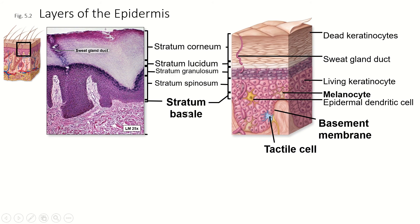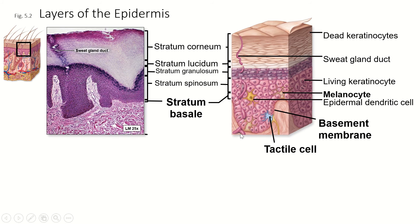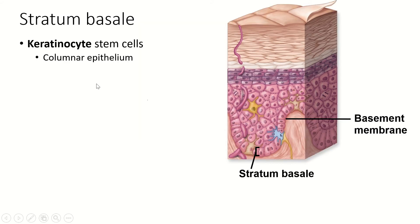Basale means basal, means bottom — so stratum basale literally means the bottom layer. It is this layer between the epidermis and the dermis. The basal cells in this layer are keratinocytes — specifically keratinocyte stem cells. They're stem cells, and this layer is going to undergo mitosis and create new cells.